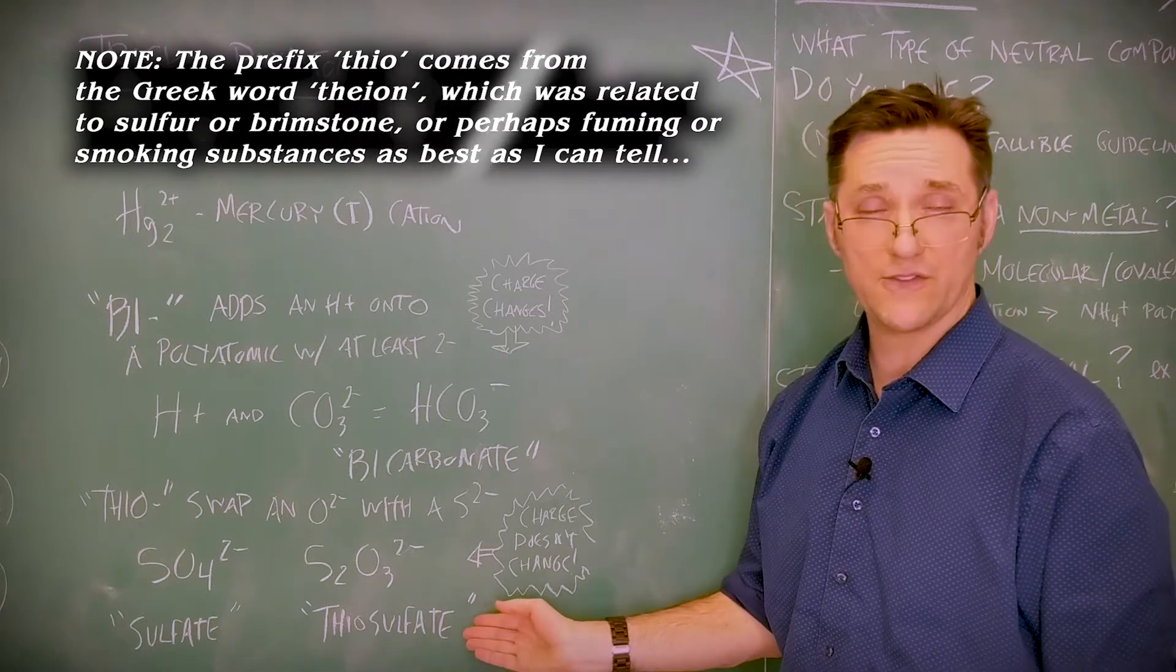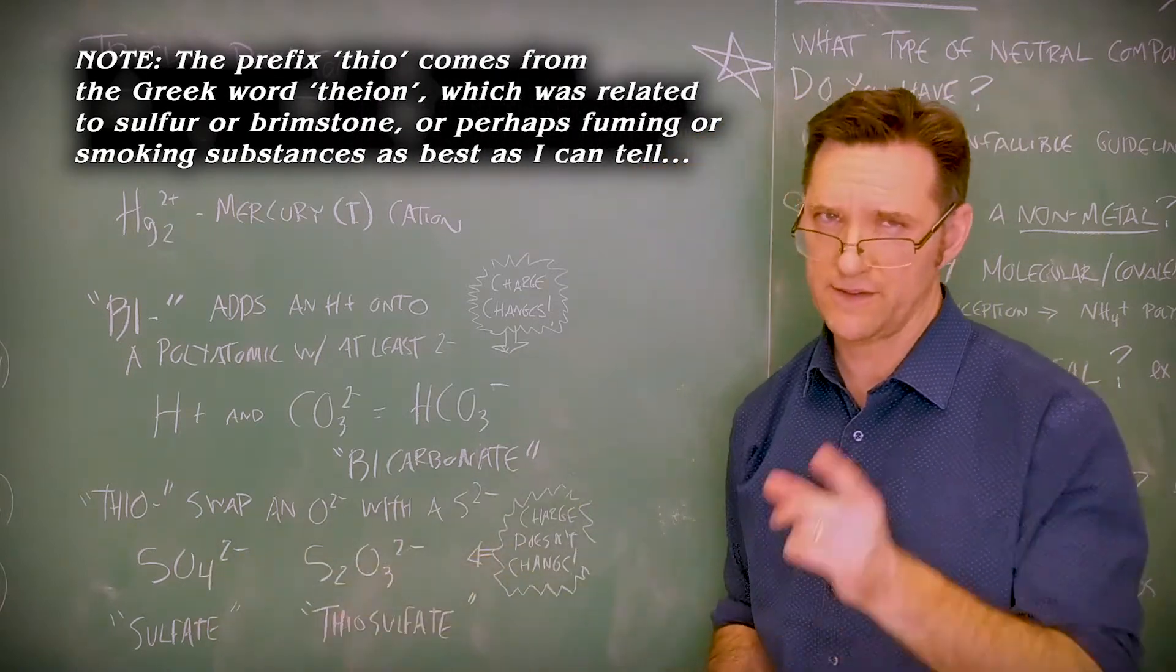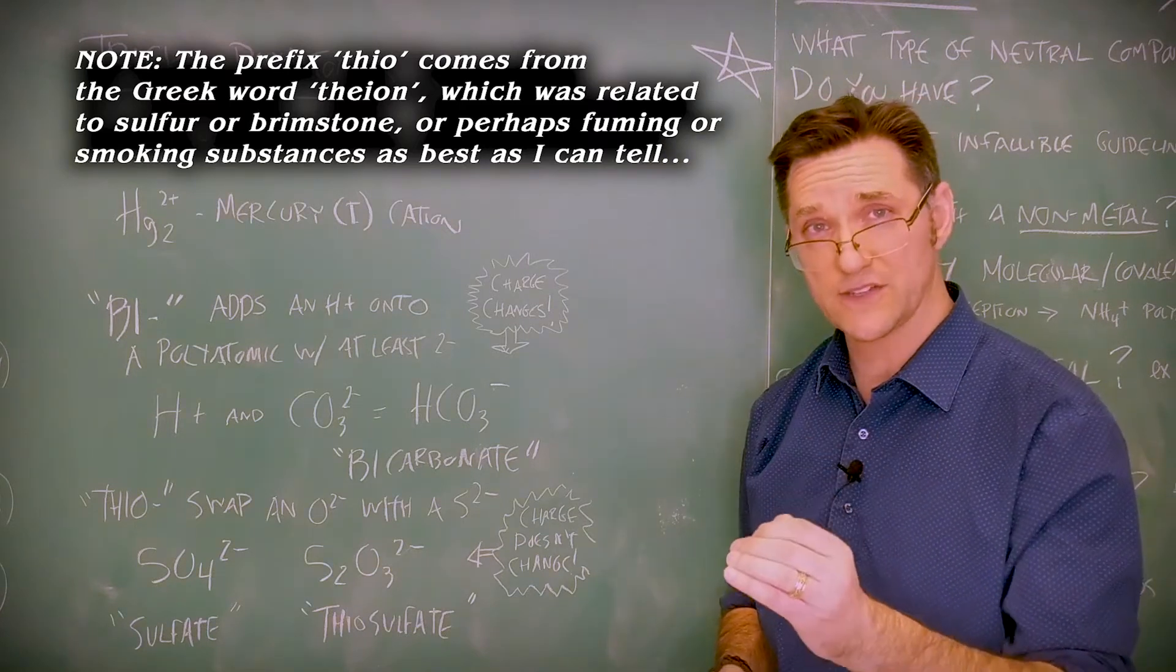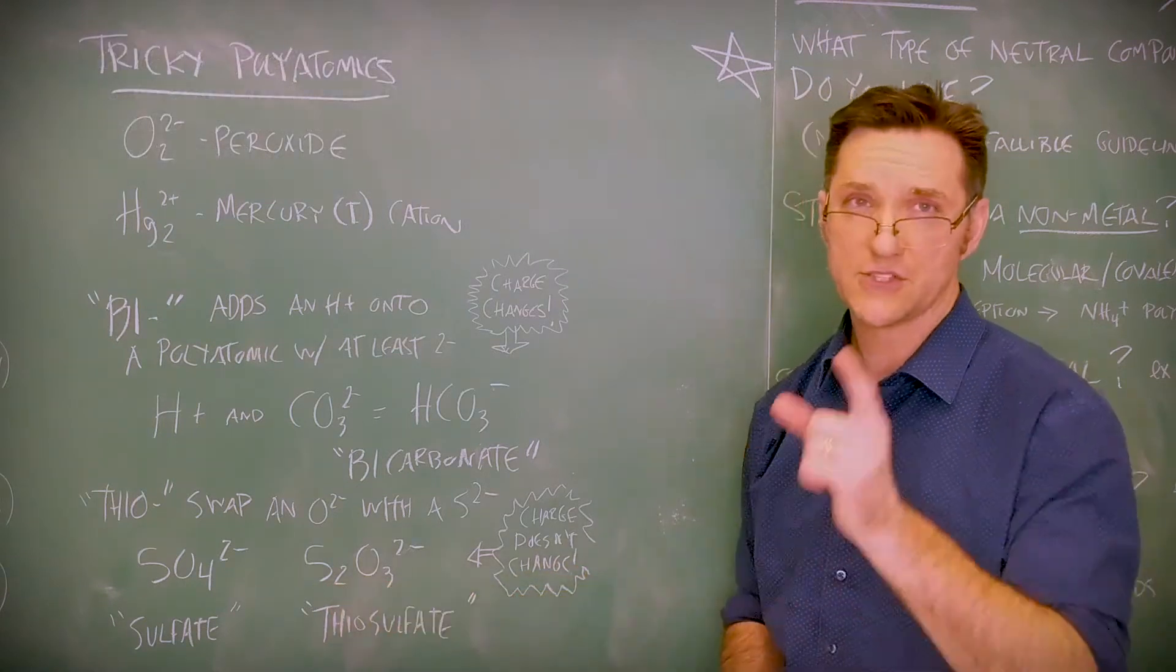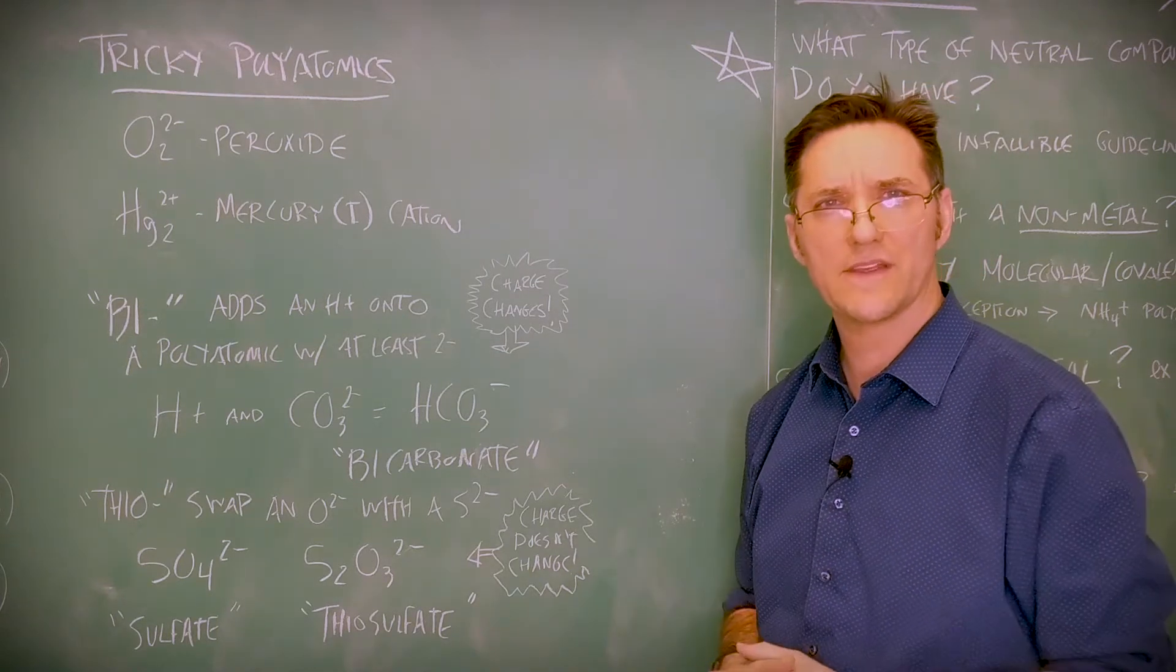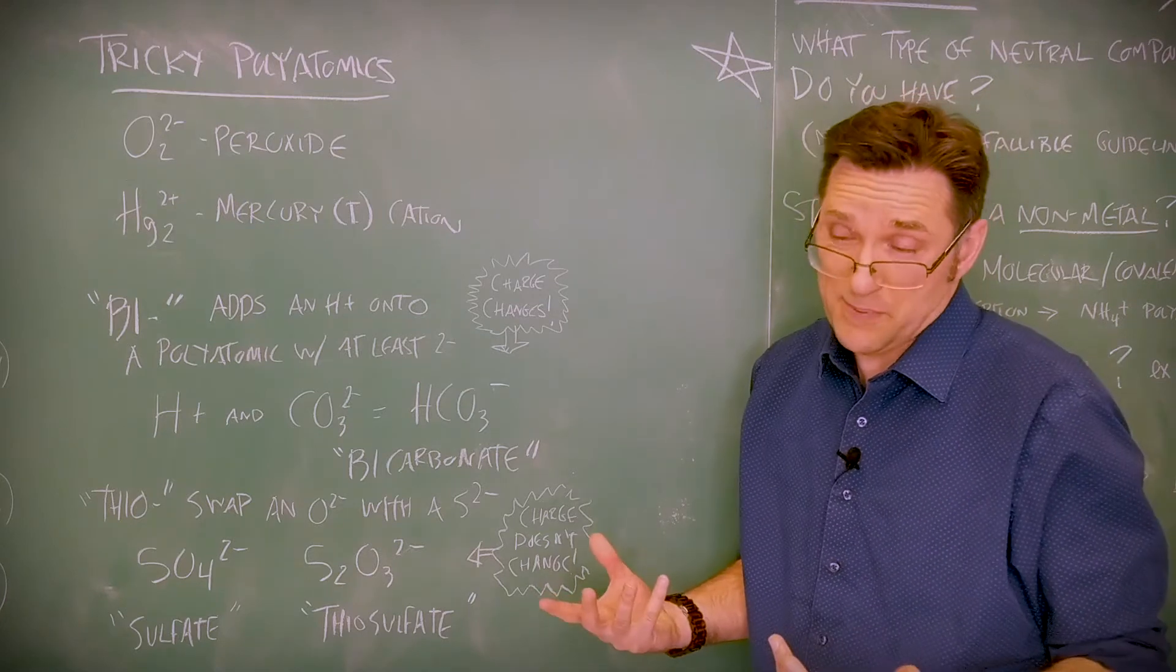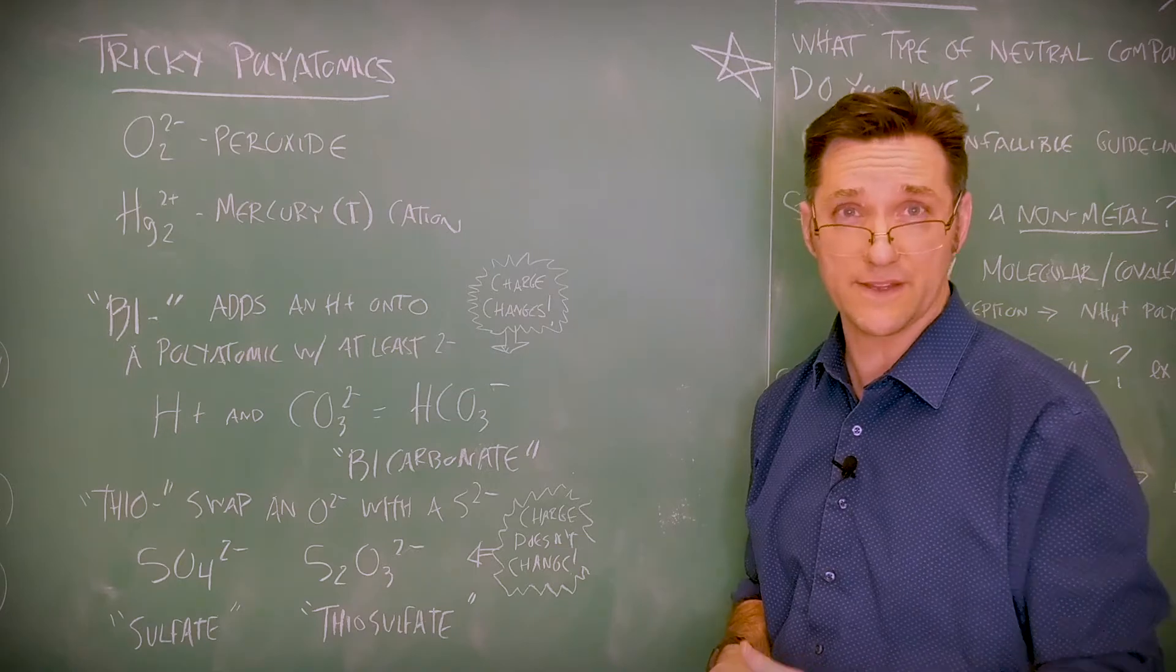Thio simply means we've taken an O2 minus and swapped it out with an S2 minus. But the charge doesn't change because those two ions have the same charge. So think of thiosulfate. Sulfate is SO4 two minus. I'm going to take away one of the oxygens and replace it with a sulfur. So now it becomes S2O3. Charge doesn't change.